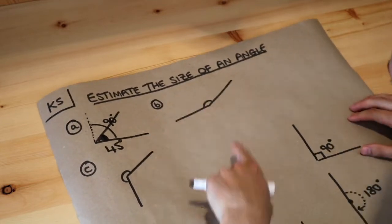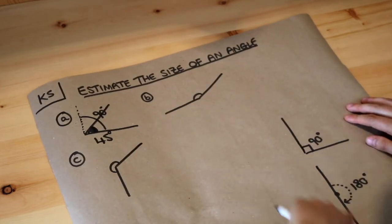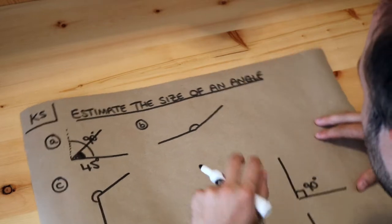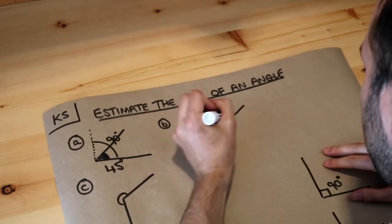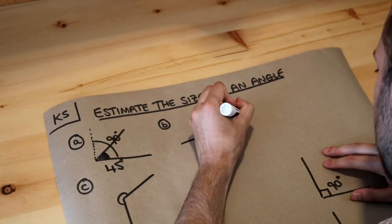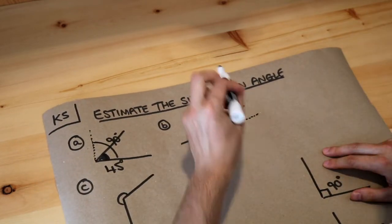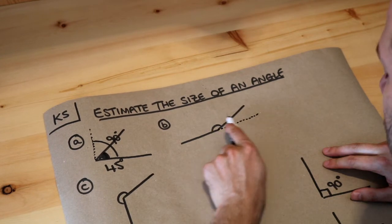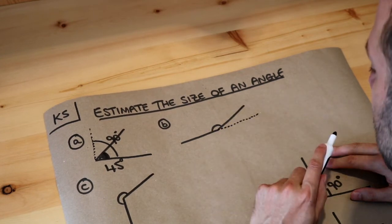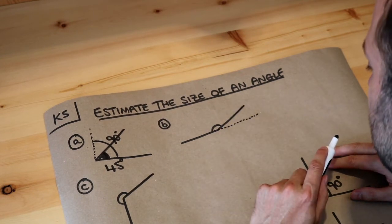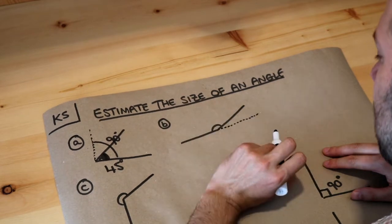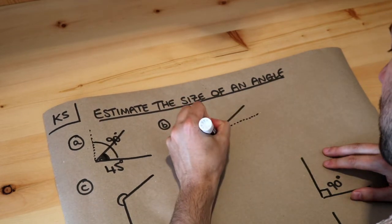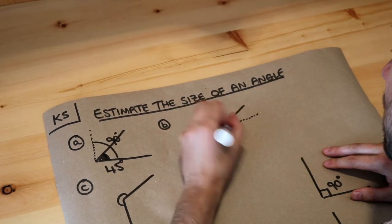Angle B looks kind of like a straight line, but not quite. If I extend this line, then we know the full angle — that half spin — would be 180 degrees. So this angle is a bit less than 180 degrees; we might estimate it's about 160 degrees.